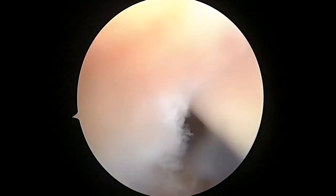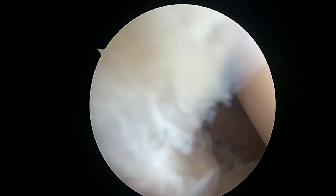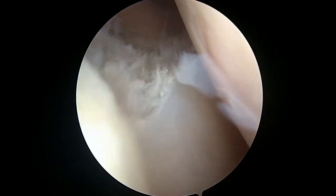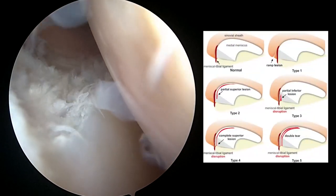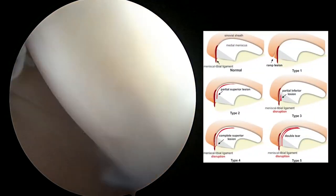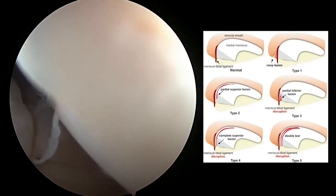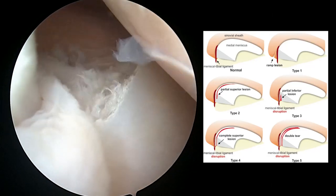This really highlights the importance of, in all ACLs, driving into the posterior medial aspect of the knee and looking for ramp lesions. We're actually going to take our shaver first and do this in all cases, but especially chronic cases, to stimulate healing. Ramp lesions are more frequently seen in chronic ACL injuries.